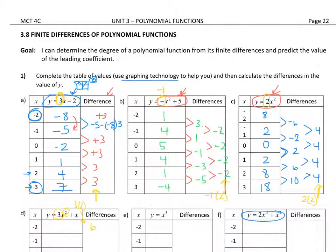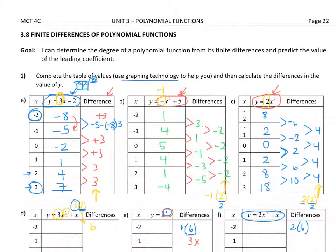The exponent was two, so the leading coefficient times two gives the constant difference for quadratics. Now for degree three, the number I was working with for the constant difference was the leading coefficient times six. This six comes from taking the degree three and multiplying by the degree before it, which is two: three times two equals six. So for cubic functions, the leading coefficient times three times two — which is six — gives the constant difference.